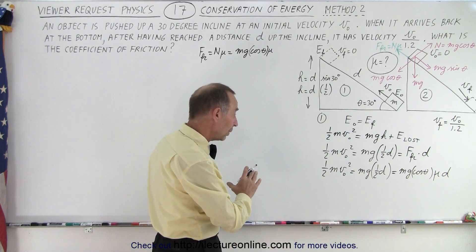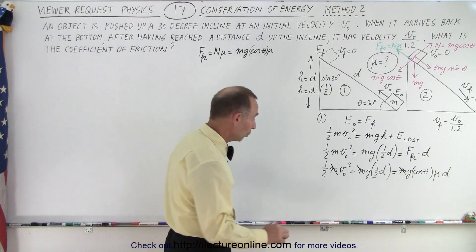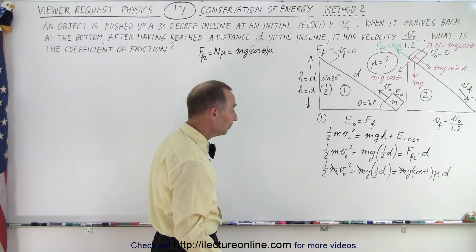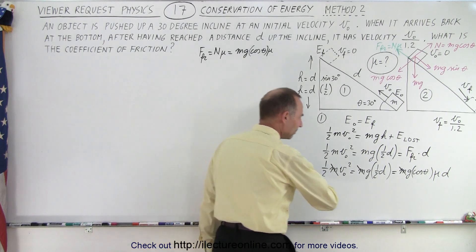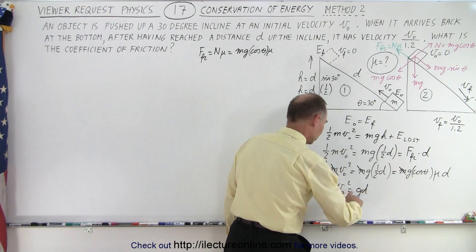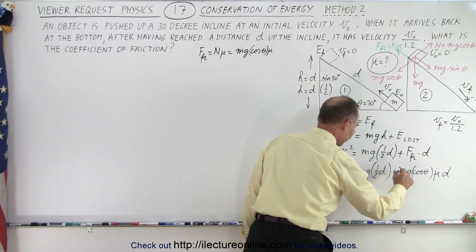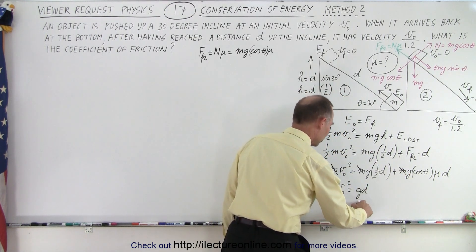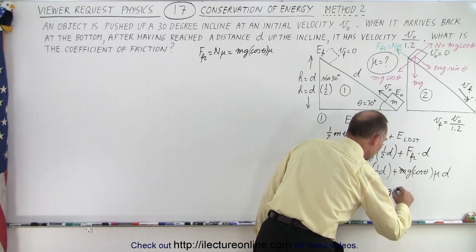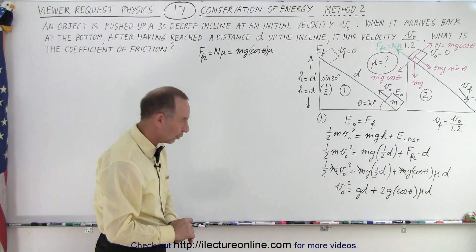Notice that we can cancel out m everywhere. We have three unknowns — v sub naught, d, and mu — so we simply cannot yet solve it. But we can simplify by multiplying everything by two. We get v initial squared equals gd plus 2g·cosθ·μ·d. That's equation number one. Of course, too many unknowns, so now we set up equation number two for the case where the block is on the way down.